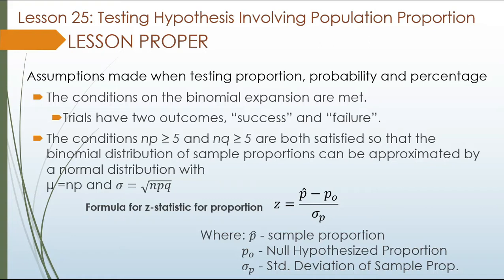We have learned so far using the one population test and other types of tests. The assumptions made when testing proportion, probability, and percentage: the conditions on the binomial expansions are met, and trials have two outcomes.